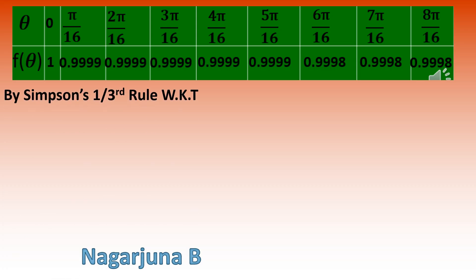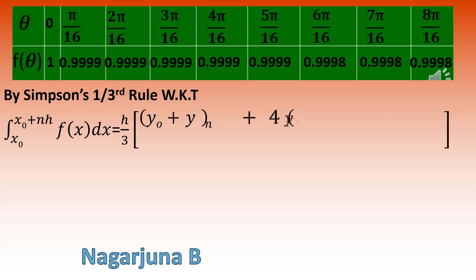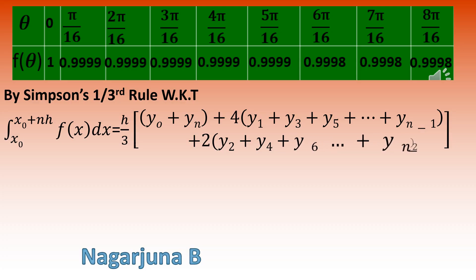By Simpson's one-third rule, the integral from x₀ to x₀ + nh of f(θ) dθ equals (h/3) × [(y₀ + yₙ) + 4×(y₁ + y₃ + y₅ + ... + yₙ₋₁) + 2×(y₂ + y₄ + y₆ + ... + yₙ₋₂)]. The y values are taken from the table of θ and f(θ) we just calculated.